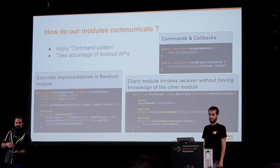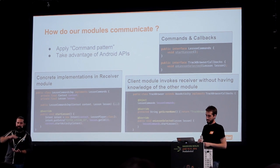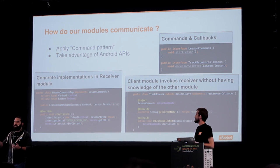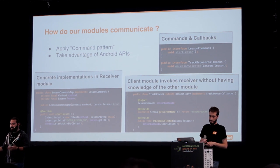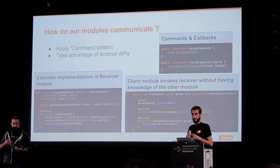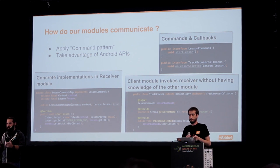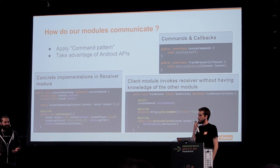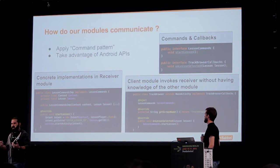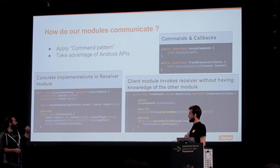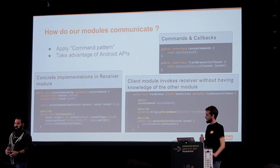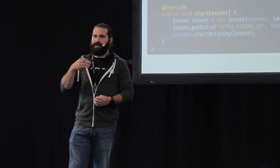Projects are usually more complicated — you don't just have dependencies from top level to lower level. You have different modules with different functionality that needs to be used from other modules, or you need to pass information between them. How can we keep our modules isolated but still have direct code communication? First, we take advantage of the Android APIs — using intents and broadcast receivers — but that's not always enough. We could have a simple interface and a dependency to the other module, but we wanted to go a step further and make it even more isolated.